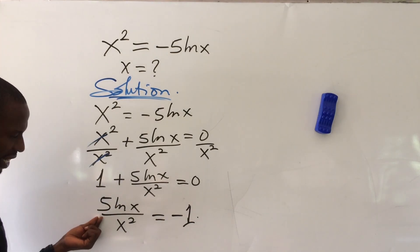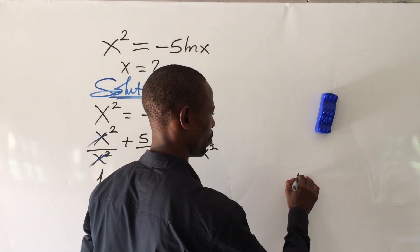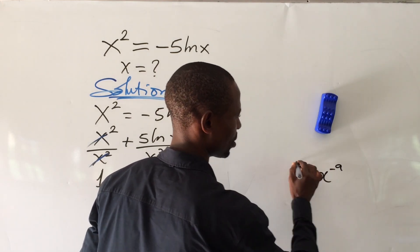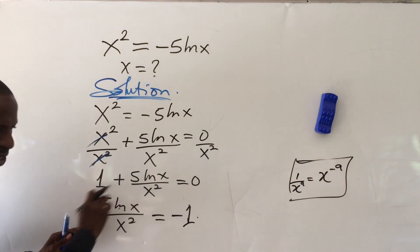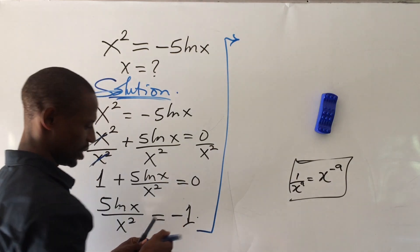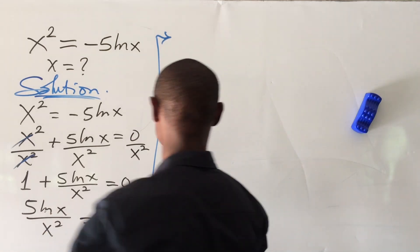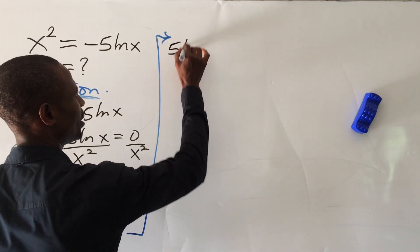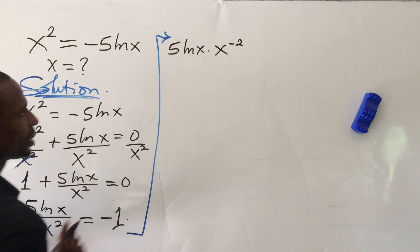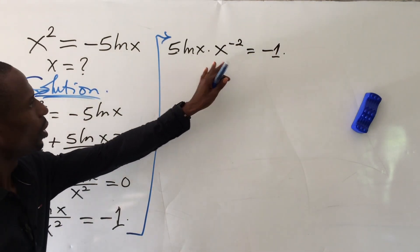Now I want to rewrite this expression on the left-hand side and remove the division sign. Remember the law that says if you have 1 all over x to the power of a, this equals x to the power of minus a. Applying this rule, we can rewrite the left-hand side. So this gives us 5 ln(x) times x to the power of minus 2, equal to minus 1.